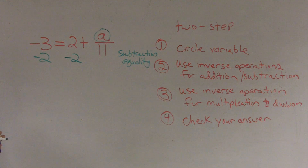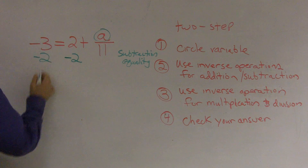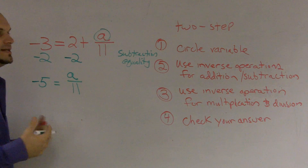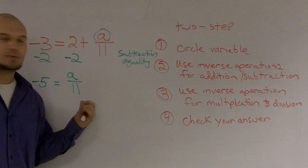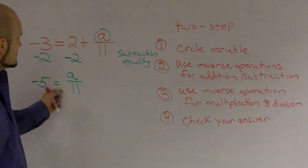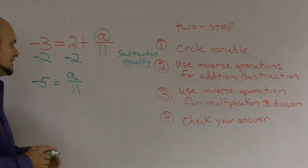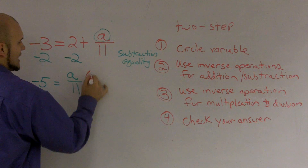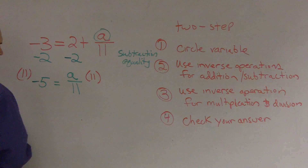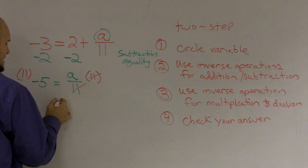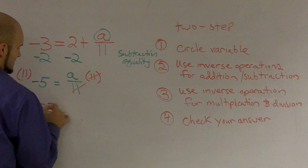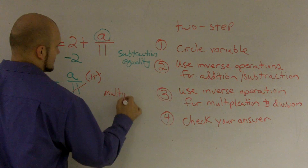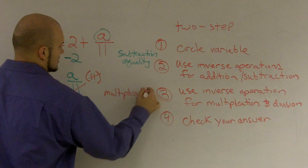For step 3, it says use the inverse operation for multiplication and division. This becomes negative 5 equals a over 11. Now I need to find the inverse operation. I notice that my variable is divided by 11, so to do the opposite of that, I'm going to multiply by 11 on both sides. When I do that, these cancel out and I get negative 55 equals a. That is by using the multiplication property of equality.